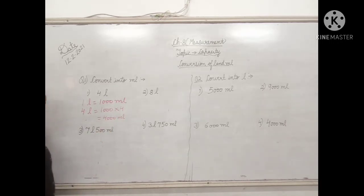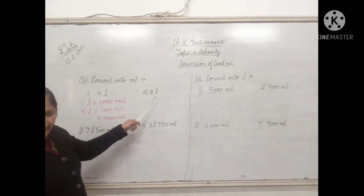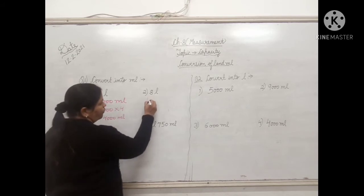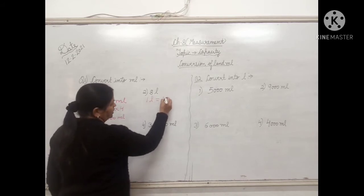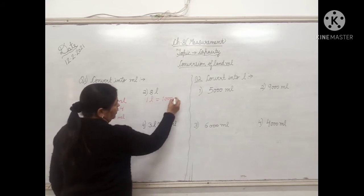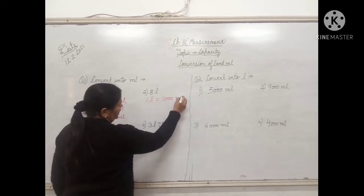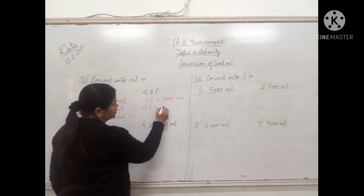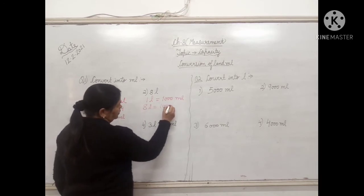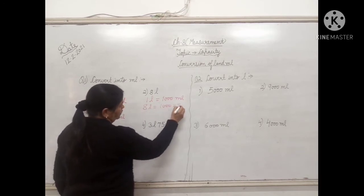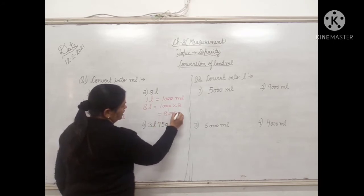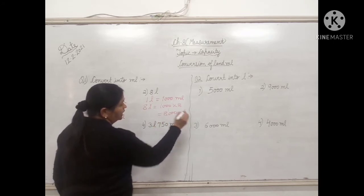This is our answer. Second one: the sum is 8 liters. Again write the formula: 1 liter equals 1000 milliliter. So 8 liter equals 1000 into 8, that is 8000 milliliter.